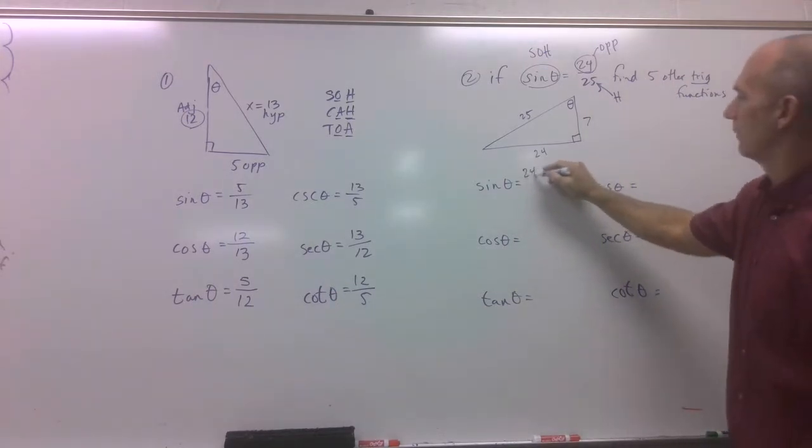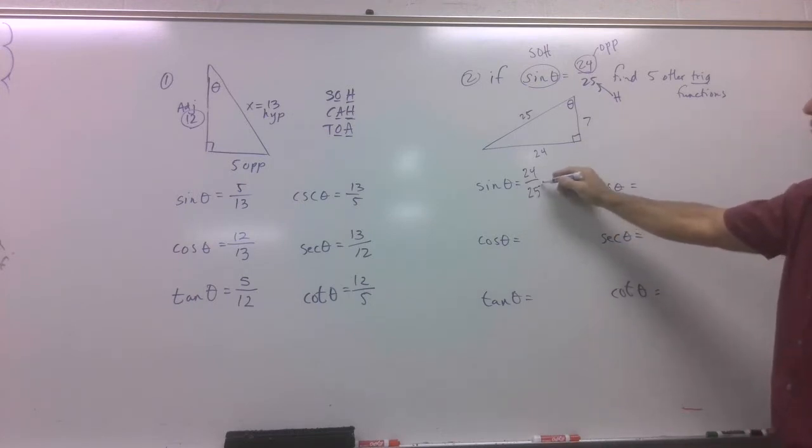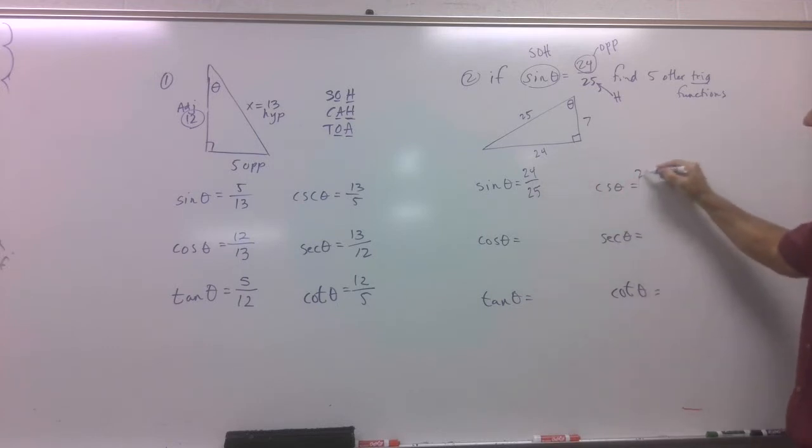This is the definite easy part. If sine is 24 over 25, and you know cosecant's the reciprocal of that. That's 25 over 24. Done.